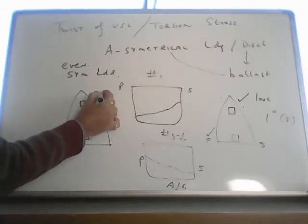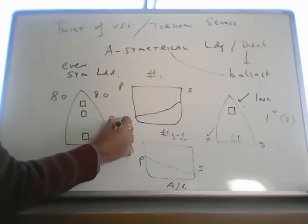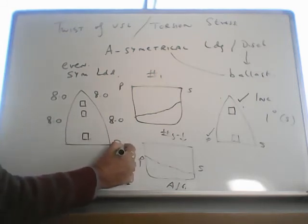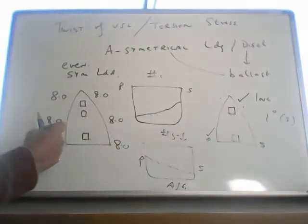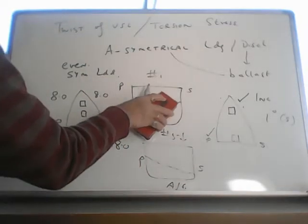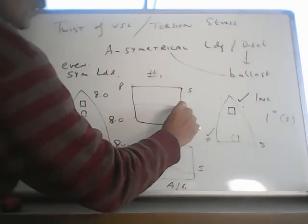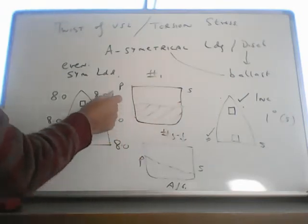Starboard forward draft 8.0, port side 8.0. Starboard midship 8.0, port midship 8.0. Starboard aft 8.0, port aft 8.0. Evenly loaded, that means in this case H1 cargo level is almost horizontal, evenly loaded. And these are the drafts.